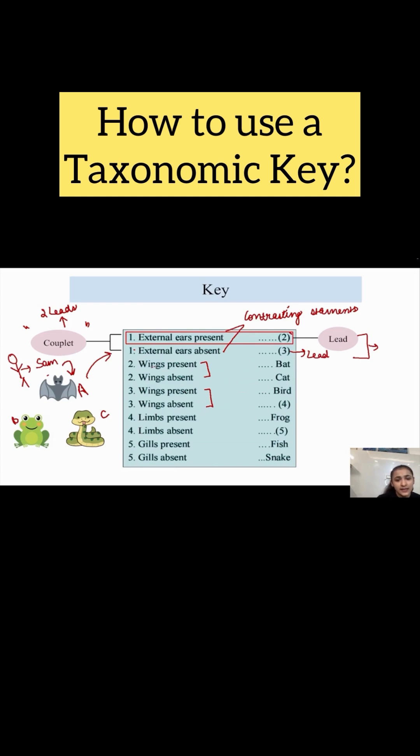Now, second couplet is saying wings are present. So, are wings present in this organism? Yes, wings are present. Now, we have identified it that our organism number A is a bat.